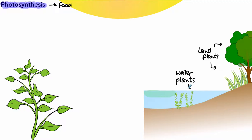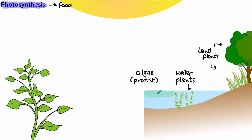We also have another kind of living thing called algae. Algae is a microscopic living thing and we describe it as photosynthetic as well. This type of living thing is a protist, which we've looked at in another video.